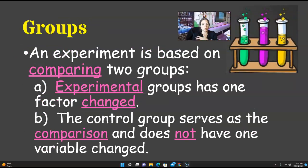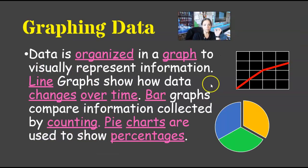So we do have groups, and this goes along with what I was saying. An experiment is based on comparing two groups. We've got the experimental, the one with the fertilizer, the group that has been changed, whereas you have the control group, which is the comparison that does not change, that does not have that variable. The same plant, just with water.